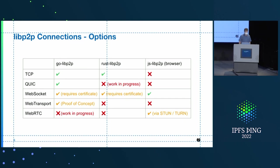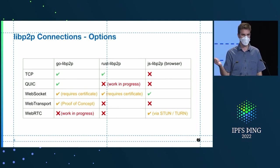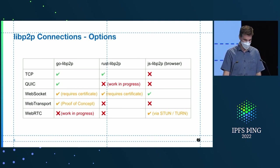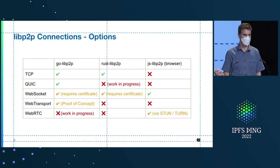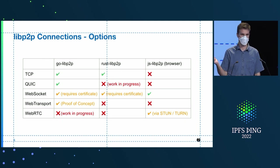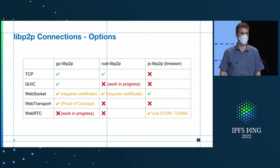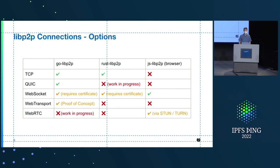This is really exciting. If people wanted to get involved and help make this a reality, what are some key ways the community could contribute? Specification review is the best way to get started. We also need help with implementation — for WebTransport there is a pull request, and for WebRTC there's a pull request as of today. For JS-LibP2P, we also need help with implementation for both WebTransport and WebRTC. Now is a good time to get involved.